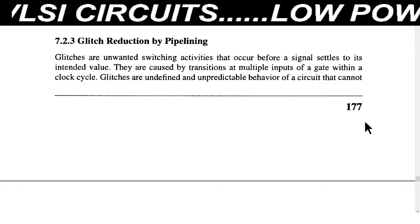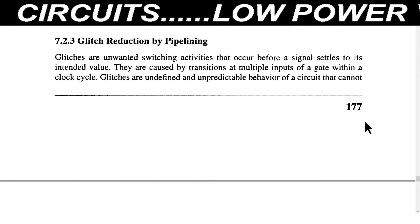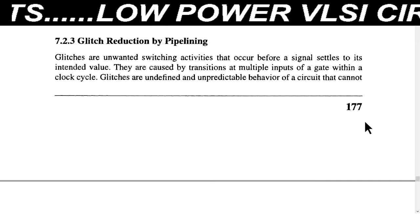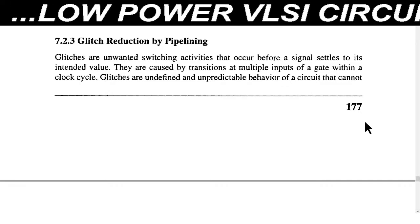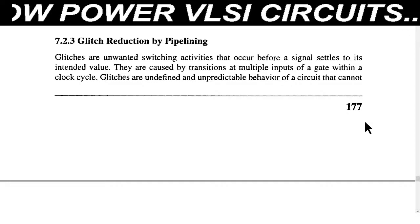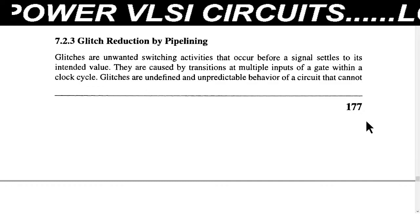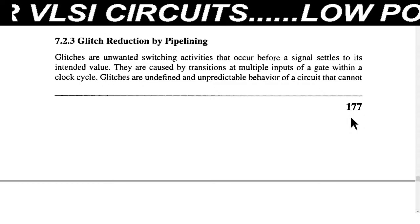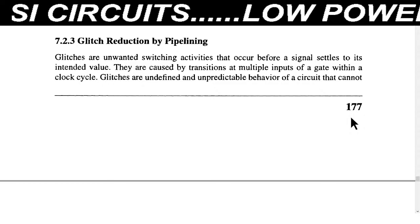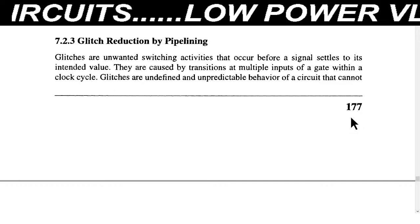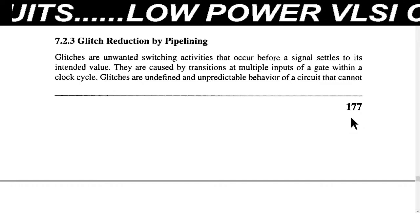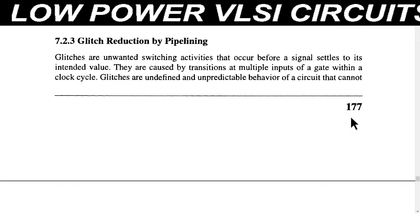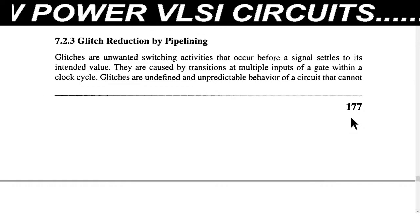We know that when the input is switched, accordingly the output will also switch. But if unwanted switching activity occurs on the input side, then because of that, some glitches — some unwanted switching — occur on the output side. That unwanted switching is known as glitches. The occurrence of glitches depends on the logic depth of the node.